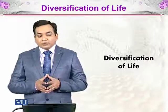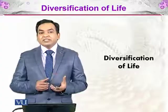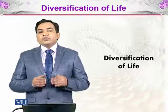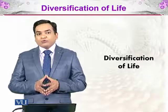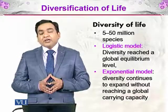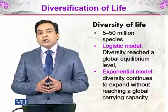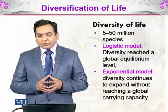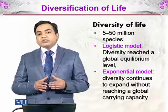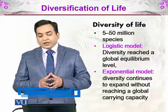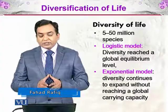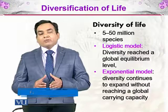In this particular module, we will be discussing how the diversification of life has taken place from whatever topics we have covered earlier. Today we have 5 to 50 million species on the surface of Earth, which is a lot of biodiversity. To explain how this diversity reached at this point, we have a logistic model of diversity, which states that diversity reached a global equilibrium level.